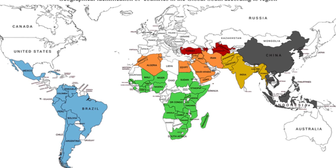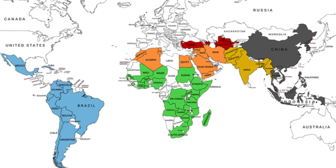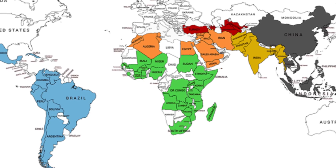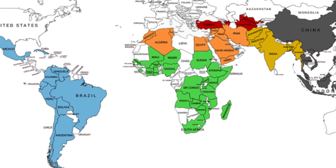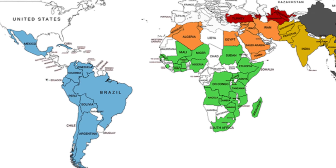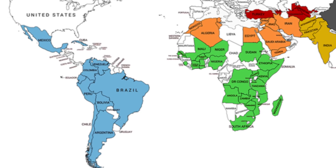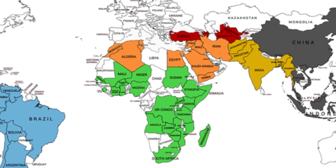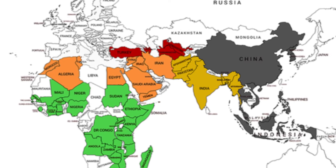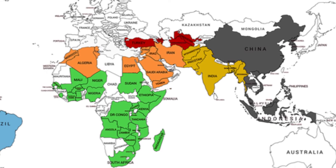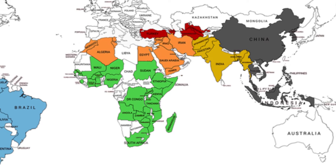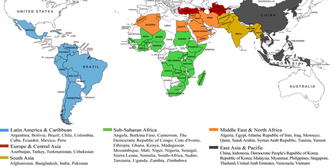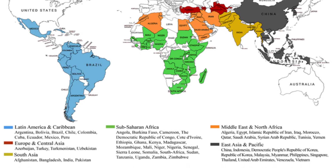Countries of the Global South include African nations like Nigeria, South Africa, Kenya, Egypt, Ghana, and Ethiopia; Latin American countries such as Brazil, Argentina, Mexico, Colombia, and Peru; Asian countries including India, China, Indonesia, Pakistan, the Philippines, and Vietnam; as well as some countries in Oceania like Papua New Guinea and Fiji. While there is no official list of Global South countries, experts agree that about 100 countries belong to this group.